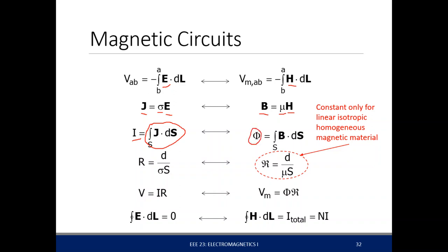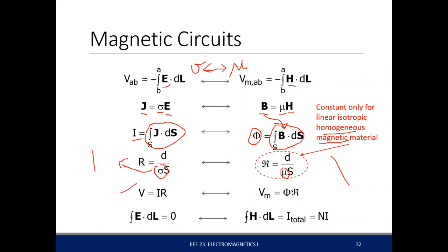The current is the surface integral of the current density. Similarly, the quote-unquote current in magnetic circuits is a surface integral of the magnetic flux density. For a uniform material, resistance is D over σS and reluctance is D over μS. Therefore mu and sigma are analogs of each other — both define how much current will flow through a material.